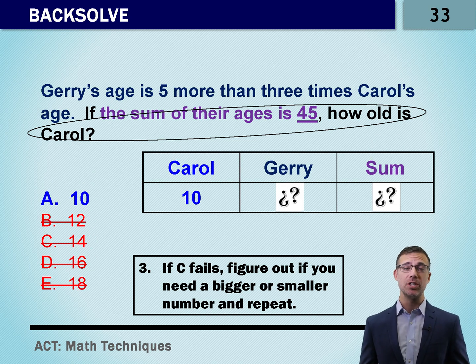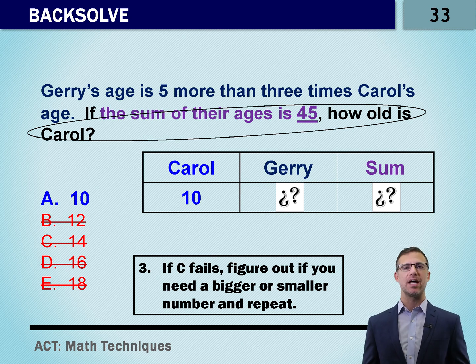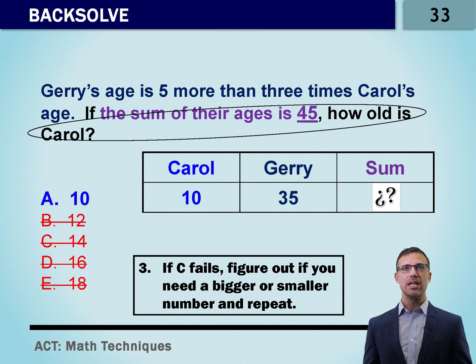And if we'd like to double check, we certainly can. Five more than three times 10: three times 10 is 30, plus five is 35. 10 plus 35 is 45. And we're done.